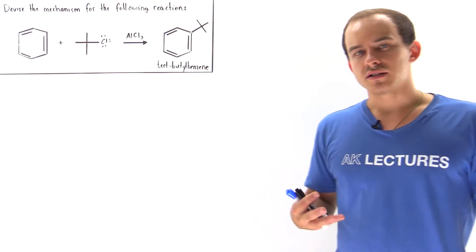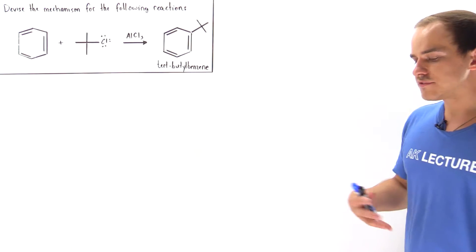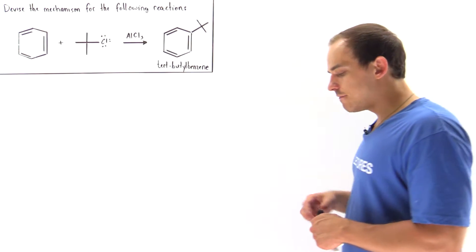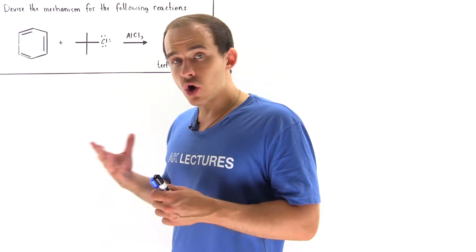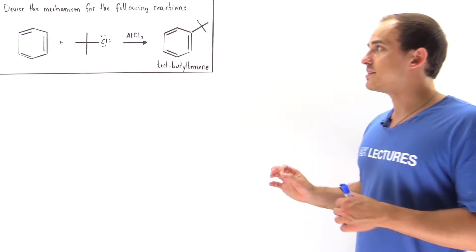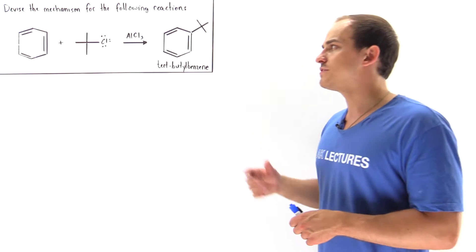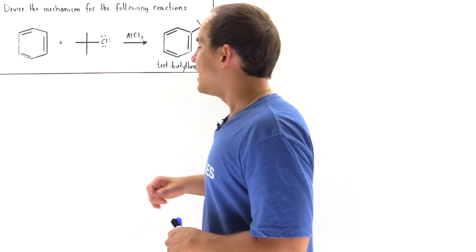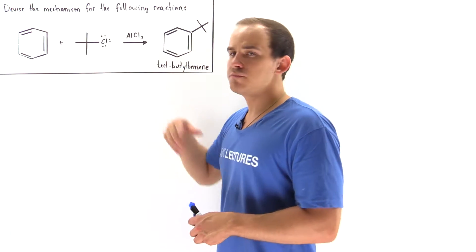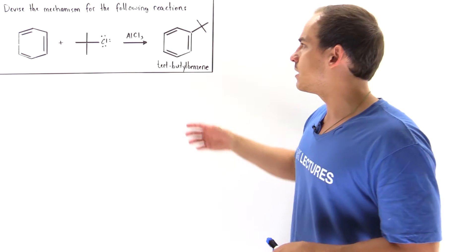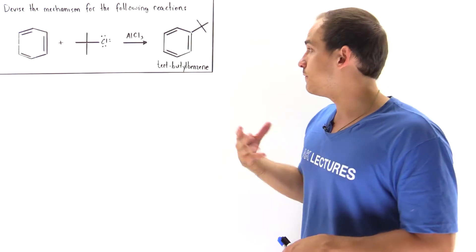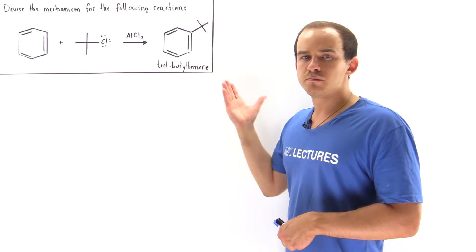Now that we've discussed the Friedel-Crafts alkylation reaction with benzene, let's take a look at the following example in which our goal will be to devise the reaction mechanism. We have benzene reacted with tert-butyl chloride in the presence of our catalyst, aluminum chloride, and we formed tert-butylbenzene.